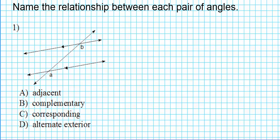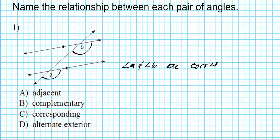For question number one we have two parallel lines cut by a transversal. Now if you notice where B is — B is in the interior of the first transversal and A is in the exterior. They are on the right side of the transversal. So we have one on the interior and one on the exterior of the same side of the transversal. These two angles, angle A and angle B, are known as corresponding angles — they occupy the same angular position at the point of intersection between the transversal and the two parallel lines.